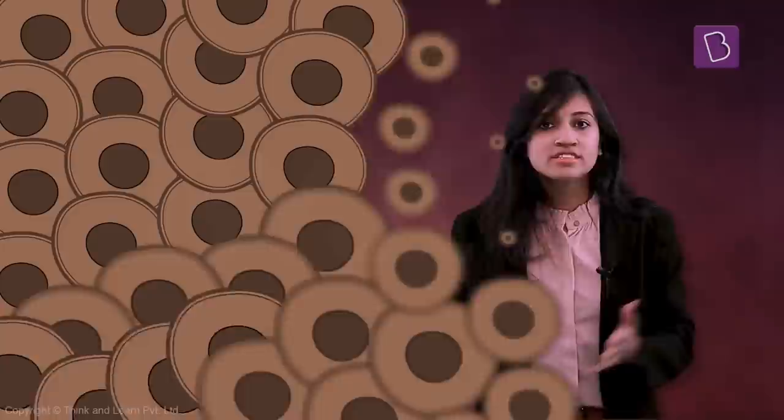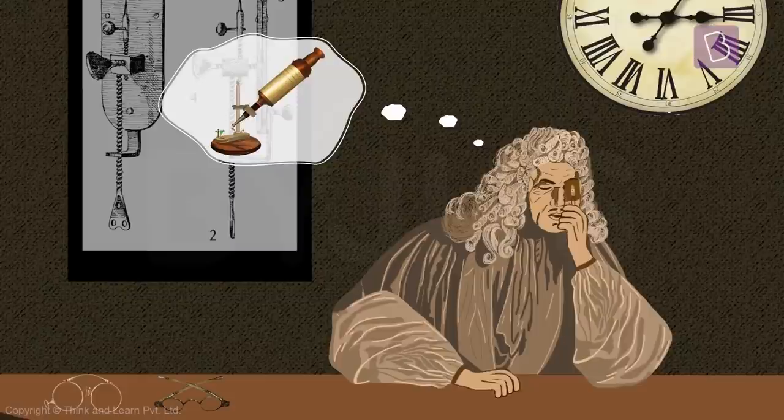This basically means that although Hooke discovered that cells existed, he did not see them alive. Who did then? Let me introduce Anton van Leeuwenhoek - not a scientist, mind you, but a Dutch lens maker. He believed he could make a better microscope than Robert Hooke and improve upon his work. So he crafted way better lenses and constructed an improved microscope.